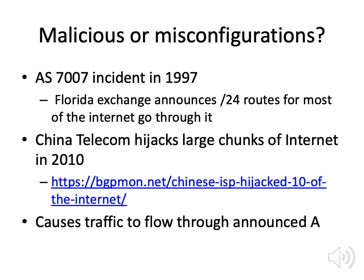In 2010, China Telecom announced routes for large chunks of the internet, meaning a lot of traffic from the United States, Europe, and elsewhere was routed through China and back again. This meant all that traffic was traversing routers in China and could be viewed there. This causes all traffic to flow through the announced autonomous system that has the shorter or more specific route.